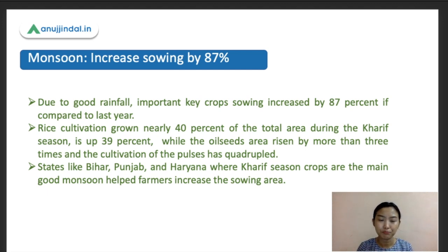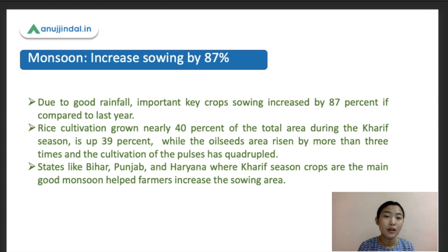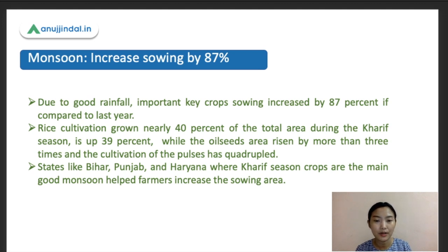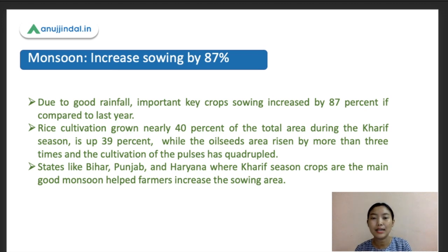The monsoon has a direct impact on the country's agricultural GDP. The planting of kharif season crops — which are summer crops like rice, sugarcane, pulses, and oilseeds — begins with the onset of monsoon rains in June. Good rainfall leads to increased sowing area, higher production, and better farm income. Summer crops account for almost half of India's food output.